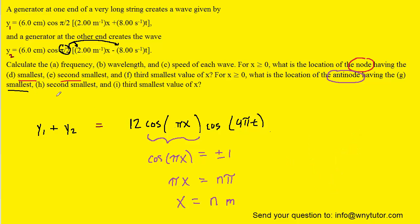And so for the smallest, we would let n equal 0. And if we plug that into this equation, we could see that the x value would equal 0 meters. So that would be the correct answer to part G.